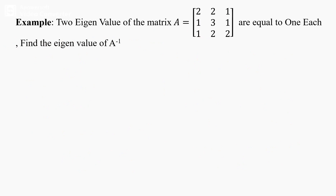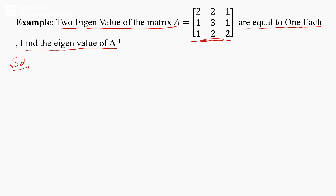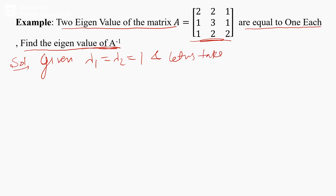Next example: two eigenvalues of a given 3×3 matrix are equal to 1 each. We need to find the eigenvalues of A inverse. First, we find the third eigenvalue. Let λ₁ = 1, λ₂ = 1, and λ₃ is unknown — we need to find that third eigenvalue.